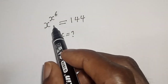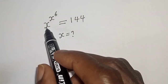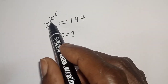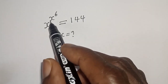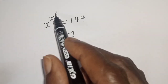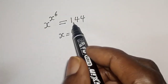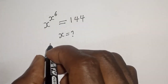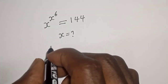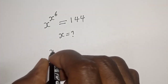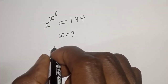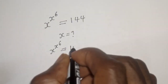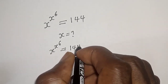Hello, welcome to Mathfocus. How to solve for s in this equation: s raised to power s raised to power 6 is equal to 144. We have s raised to power s raised to power 6 is equal to 144.